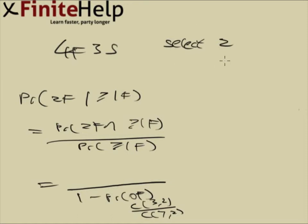Two freshmen intersect at least one freshman. Well, if you have two freshmen, you have at least one freshman, so to say 'at least one freshman' is redundant.